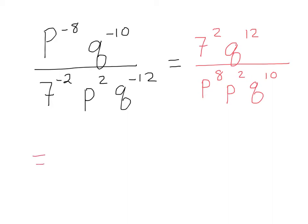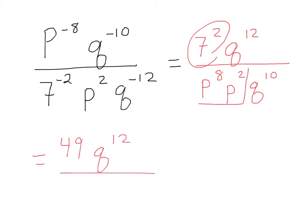So I'm going to write this as: first off, 7 squared is 49, q to the twelfth, over p to the eighth times p to the second, which is p to the tenth. And then I've got q to the tenth.